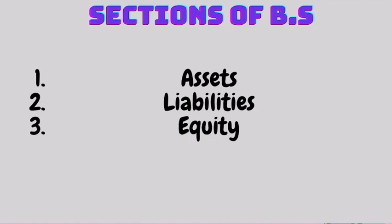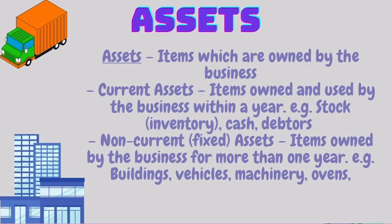There are three sections of a Balance Sheet: Assets, Liabilities, and Equity. Assets are items which are owned by the business. There are two types of Assets: Current Assets and Non-current Assets, also known as Fixed Assets. Current Assets are items owned and used by the business within a year — examples include Stock, Inventory, Cash, and Debtors. Non-current Assets are items owned by the business for more than a year, such as buildings, vehicles, machinery, and ovens.